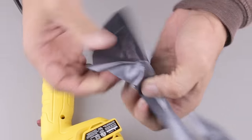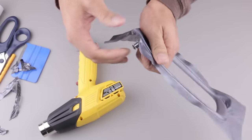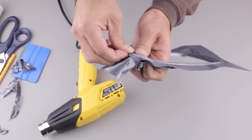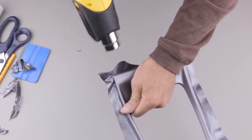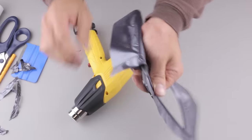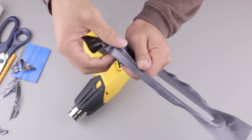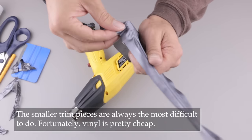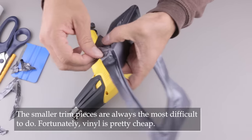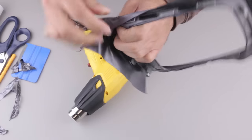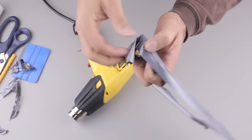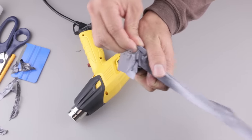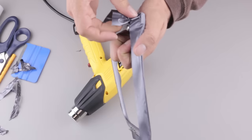See right there it doesn't look bad at all already. So hit it with heat, when you hit it with heat it kind of wraps around the corner. And that's when it wraps and it doesn't come off, that's when you know you're good.